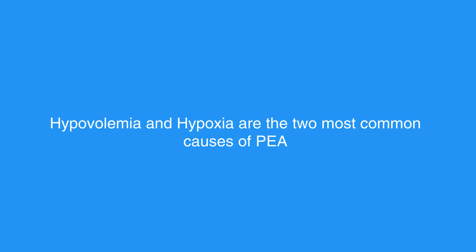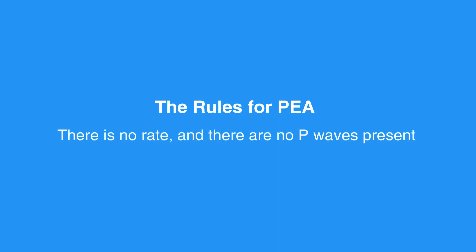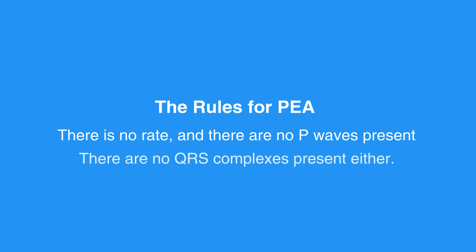Atropine is no longer recommended in cases of PEA or asystole. The rules for PEA and asystole include the rhythm as a nearly flat line. There is no rate, and there are no P waves present. The PR interval is unable to be measured due to no P waves, and there are no QRS complexes present either.